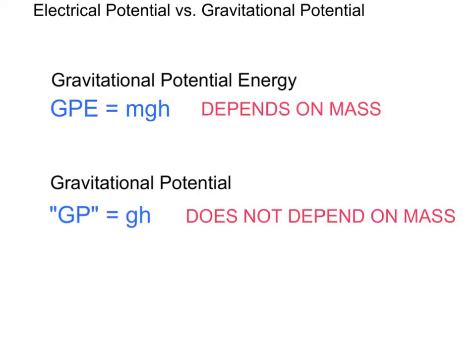In conclusion, while gravitational potential energy does depend on mass and is equal to Mgh, gravitational potential does not depend on mass and is simply equal to gh.